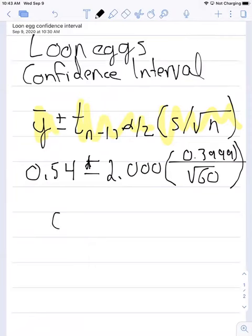When we calculate this out, we get 0.54 plus or minus 0.1033. And so while that is our answer, let's see what those values really are.